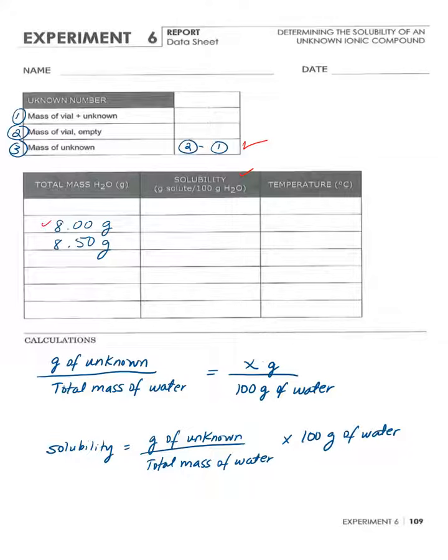That tells you that at that temperature, you have this many grams of your unknown solid soluble in that amount of water. But you want to calculate for 100 grams of water, not what we're using, which is 8 or 8.59 grams.